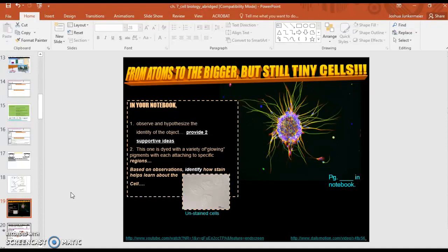Slide 19 is kind of our first activity introduction to the slide. So it says, in your notebook, observe and hypothesize the identity of the object. So what do you think this might be? Or better yet, what kind of cell do you think it might be? So go ahead and give your reason and give a little bit of evidence to indicate why you think it might be a cell or what type of cell.